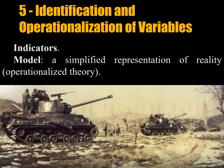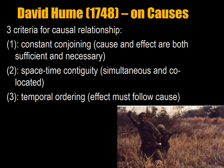It comes down to what is causation — a huge philosophical debate. David Hume in 1748 came up with three criteria for a causal relationship, which is why we don't use the words 'cause and effect' in the social sciences — we use 'independent variable' and 'dependent variable' instead. For there to be a cause-effect relationship, Hume argued: one, you have to have constant conjoining, meaning cause and effect are both sufficient and necessary towards each other; two, there must be space-time contiguity — they have to be simultaneous and co-located; and three, there must be temporal ordering — the effect must follow the cause.